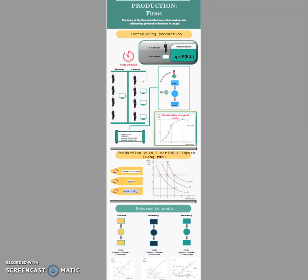Today we're looking at production, which is a function of firms. Firms use inputs to produce, and what they want to do is minimize their costs. They want to choose a quantity of output where their cost is as low as possible, making it efficient to produce at that level. This will then generate more profit for the firm.